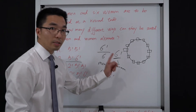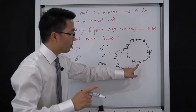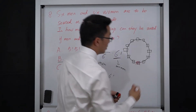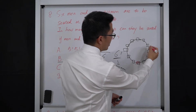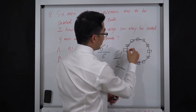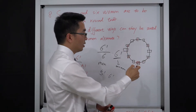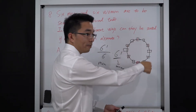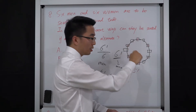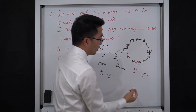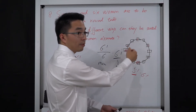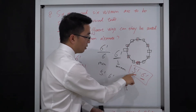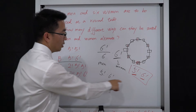We can also do this another way. We fix one man in one chair, then we still have 5 chairs for the other 5 men, giving 5 factorial arrangements. When all the men are fixed, the women still have 6 chairs, giving 6 factorial. So 5 factorial times 6 factorial — the same answer. We can do it either way.